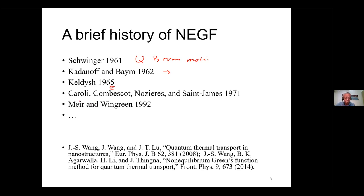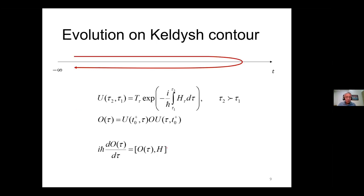People then used this to do transport. Caroli was one of the first to study electron transport, and Meir-Wingreen tried to generalize this to more general systems with interactions. In the last several years, we have worked on thermal transport — quantum thermal transport — focusing on energy transport in phonon systems and sometimes also in electron systems.